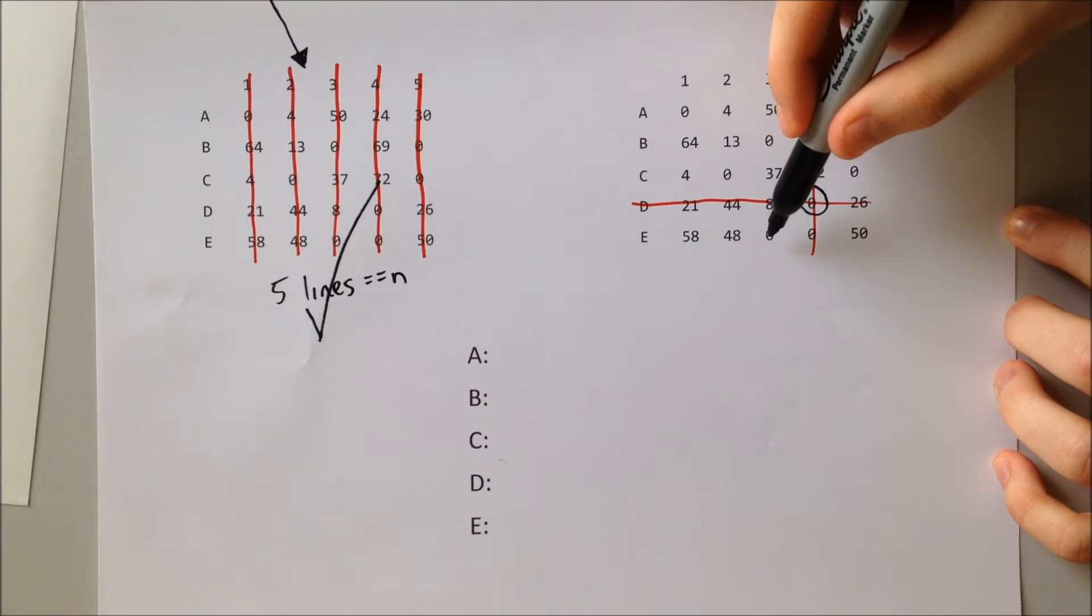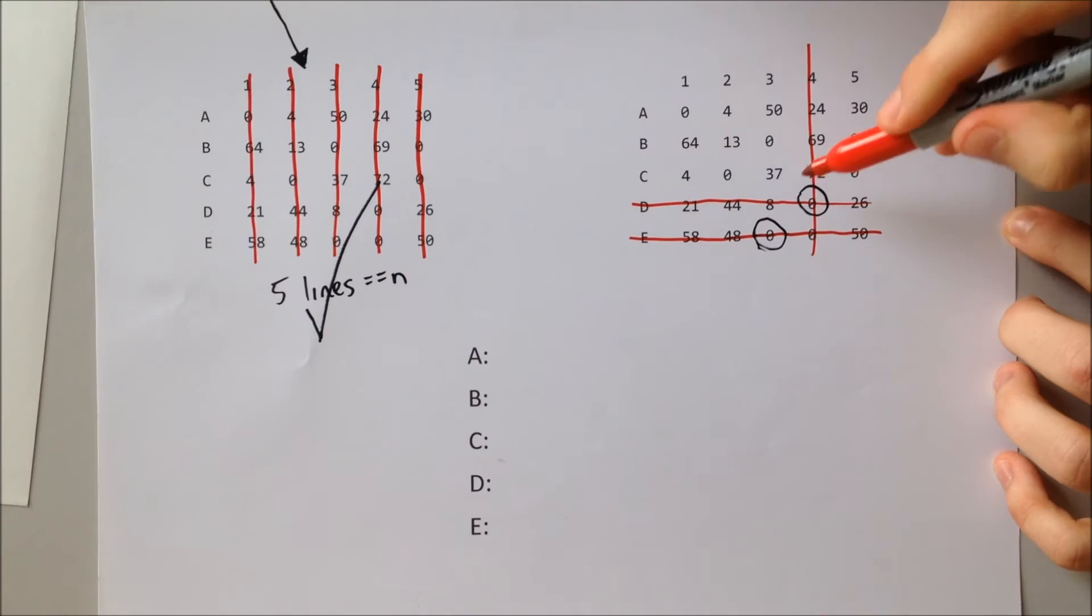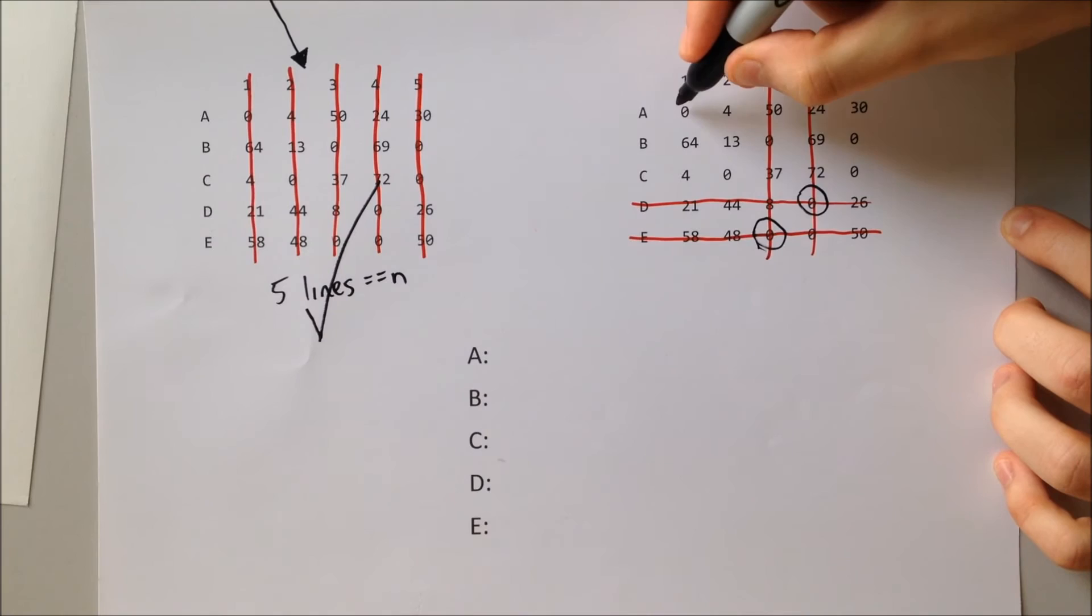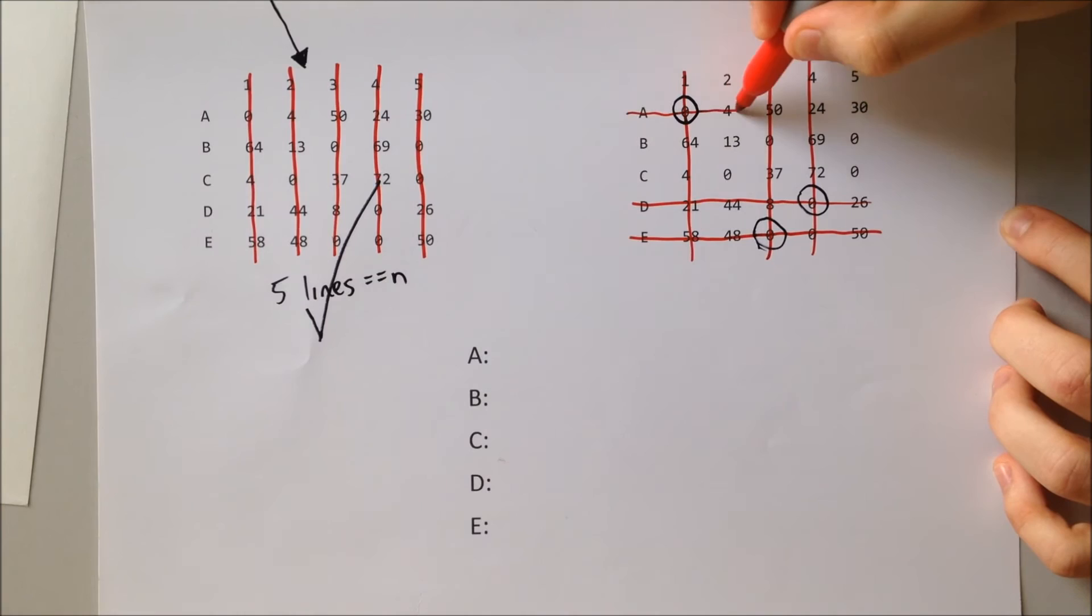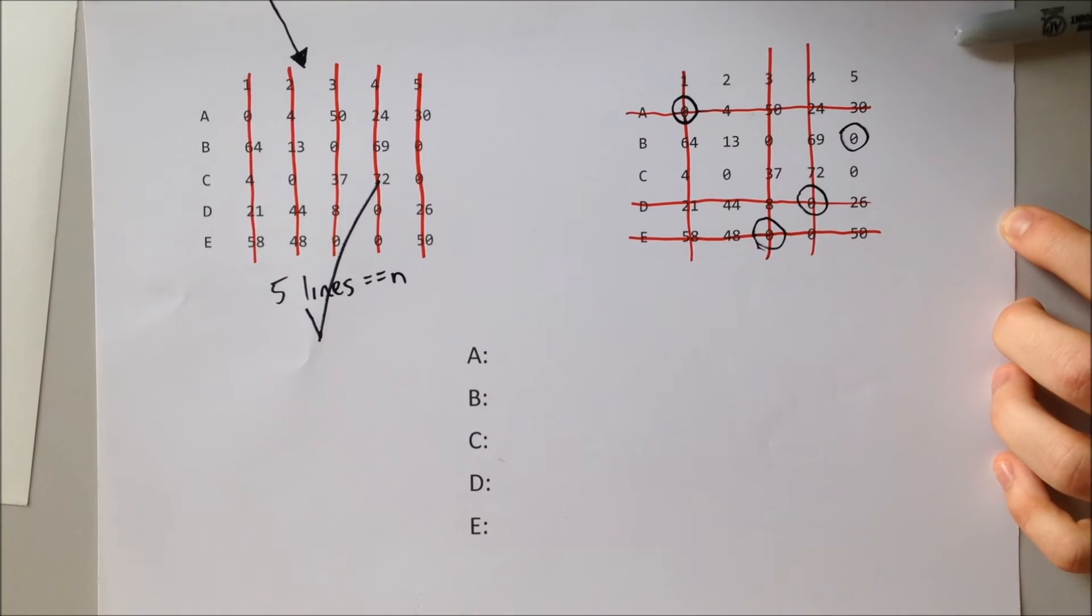This then frees up another row, meaning that we pair worker E to job three. Next, A can now be paired with job one, crossing out that row and column. This then frees up worker D to be paired with job five. And then finally, worker C to be paired with job two.